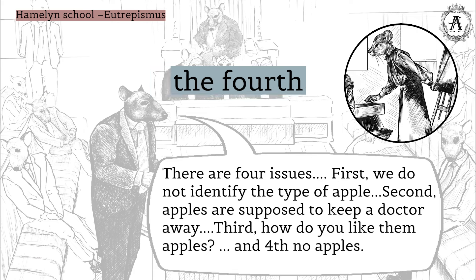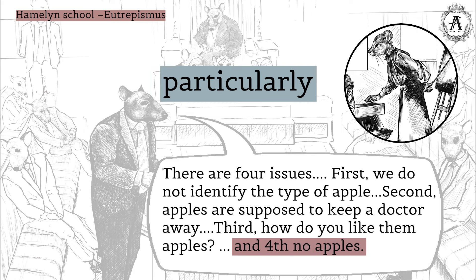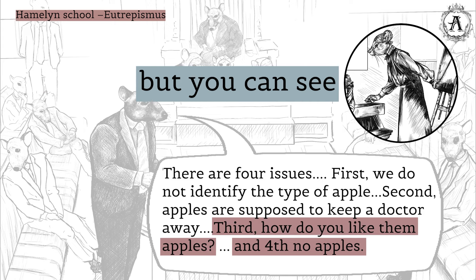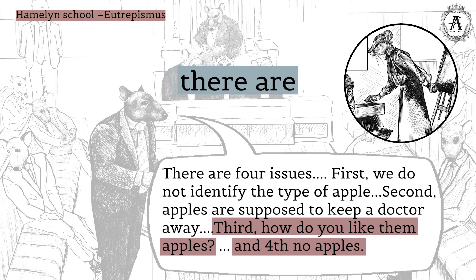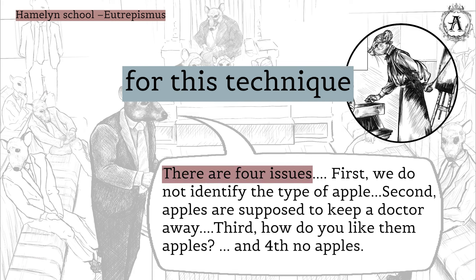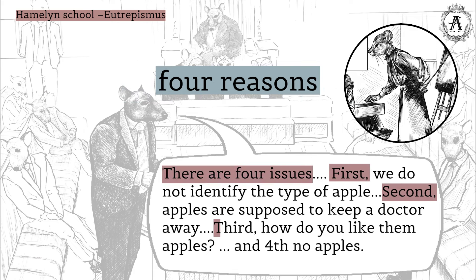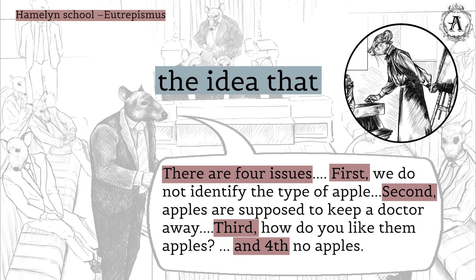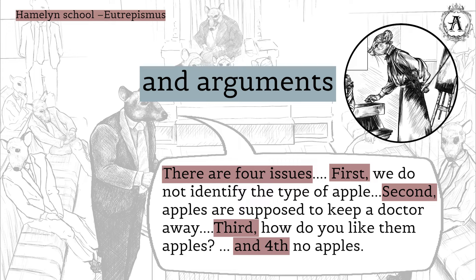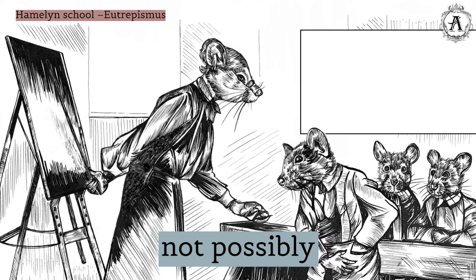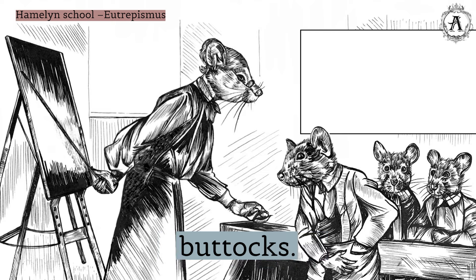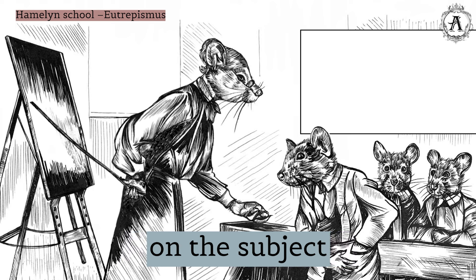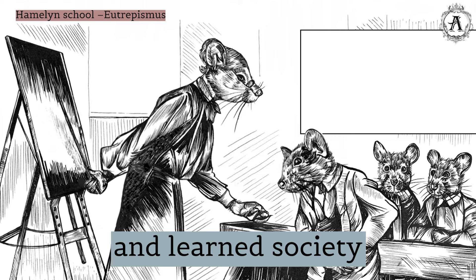Now, in this instance, the fourth reason — no to apples — that's not particularly strong. And in fact, the third one isn't very strong either. But you can see how, by saying there are four reasons, even though the third and the fourth are weak, they are embedding in the mind of the listener the idea that there is a multitude of opportunities and arguments against the apple, and therefore you could not possibly want to crush an apple between your buttocks, even if they only really have two reasonable intellectual points on the subject.